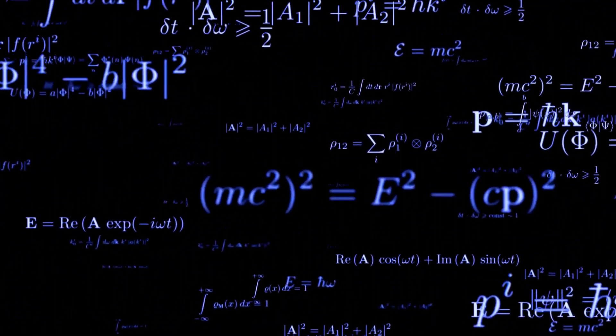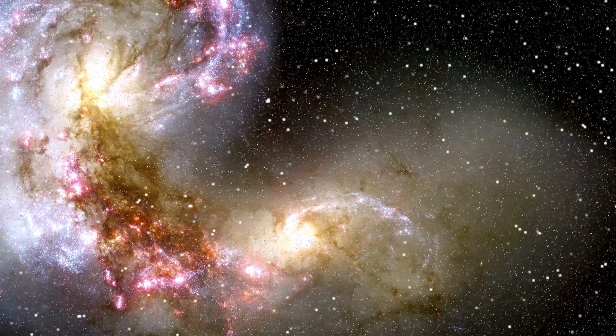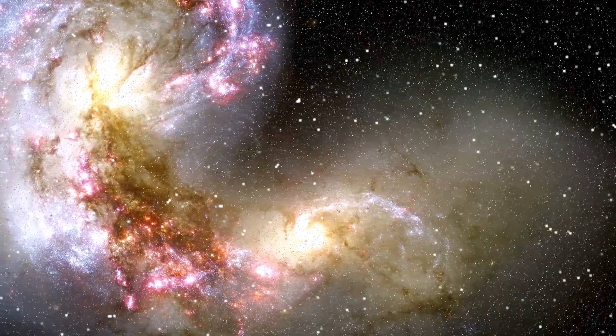And guess who gets another confirmation of this theory? Albert Einstein and his revolutionary theory of general relativity, which predicted that light could be bent by gravity. This observation fulfills Einstein's prophecy, reaffirming the brilliance of his ideas.